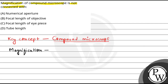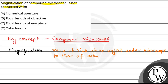If we talk about magnification, we can say that magnification is basically the ratio of the size of an object which is seen under the microscope to that of the actual size. The actual size is not under the microscope. So we will say magnification. And if we have total magnification, that is the compound microscope.